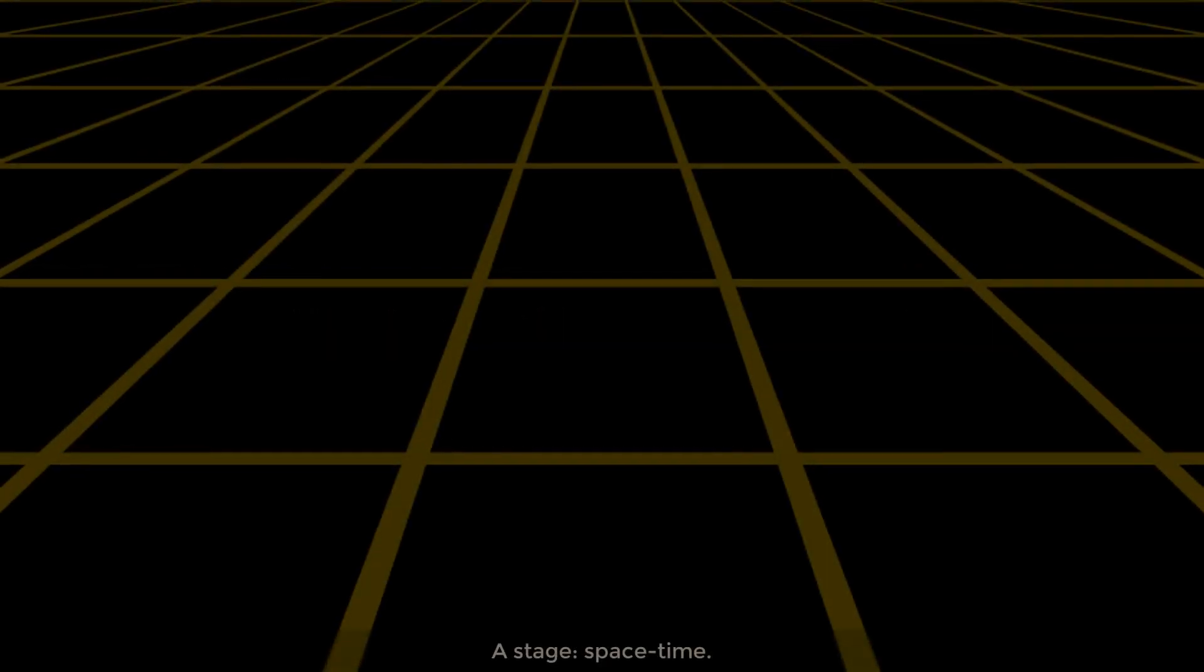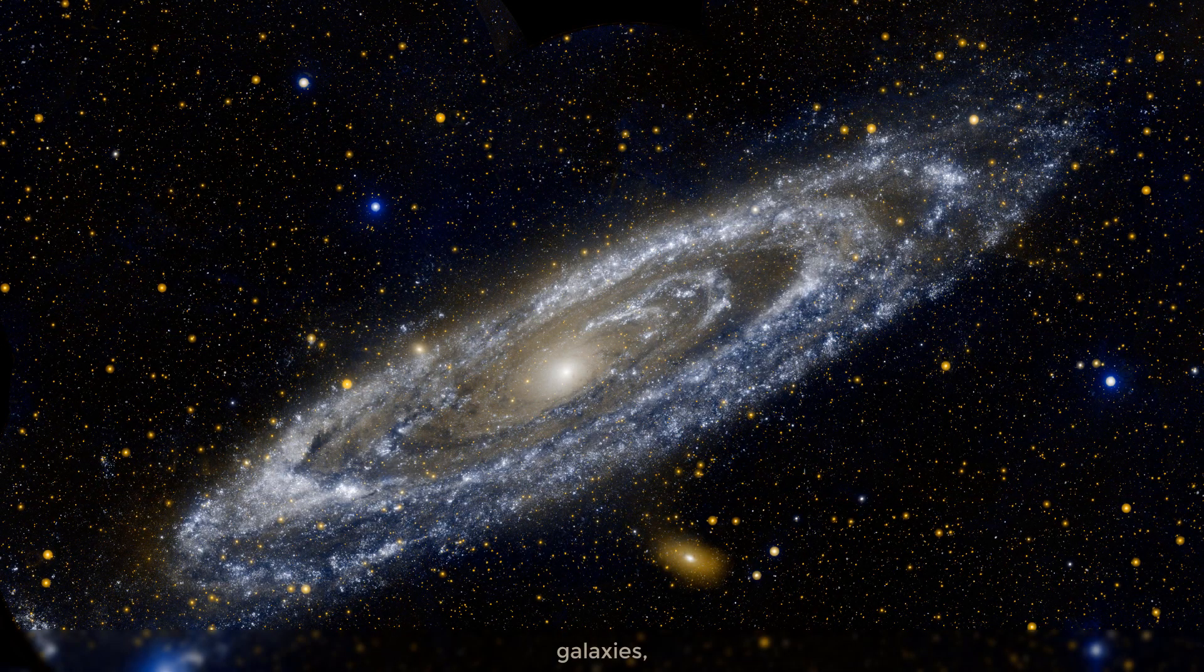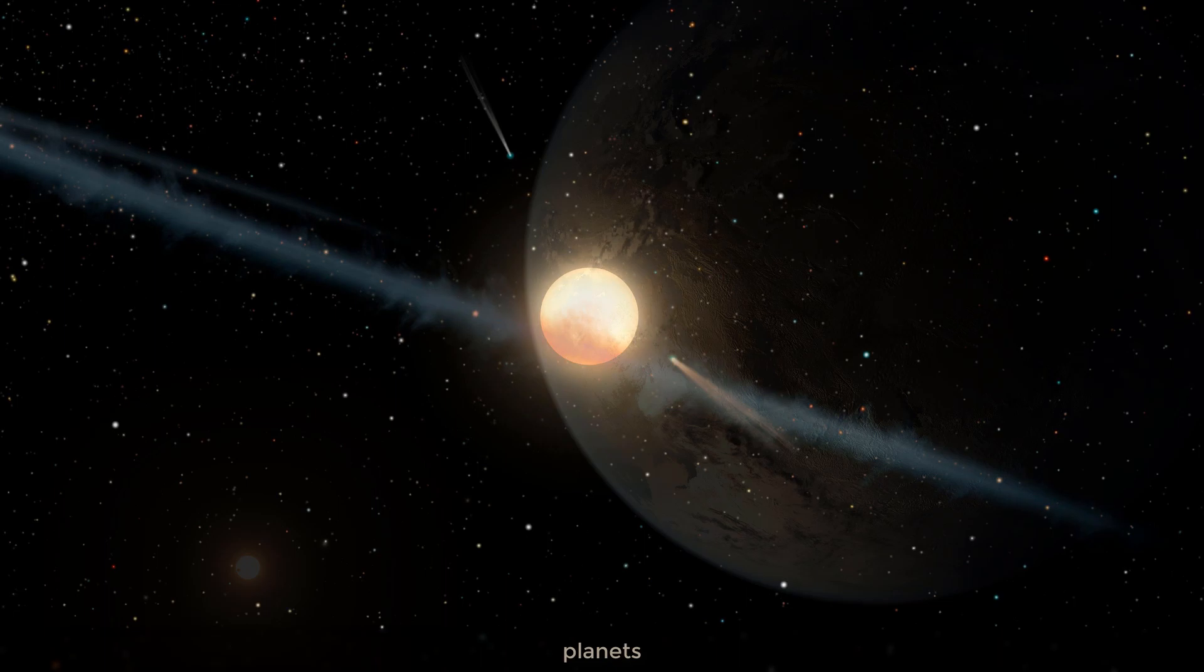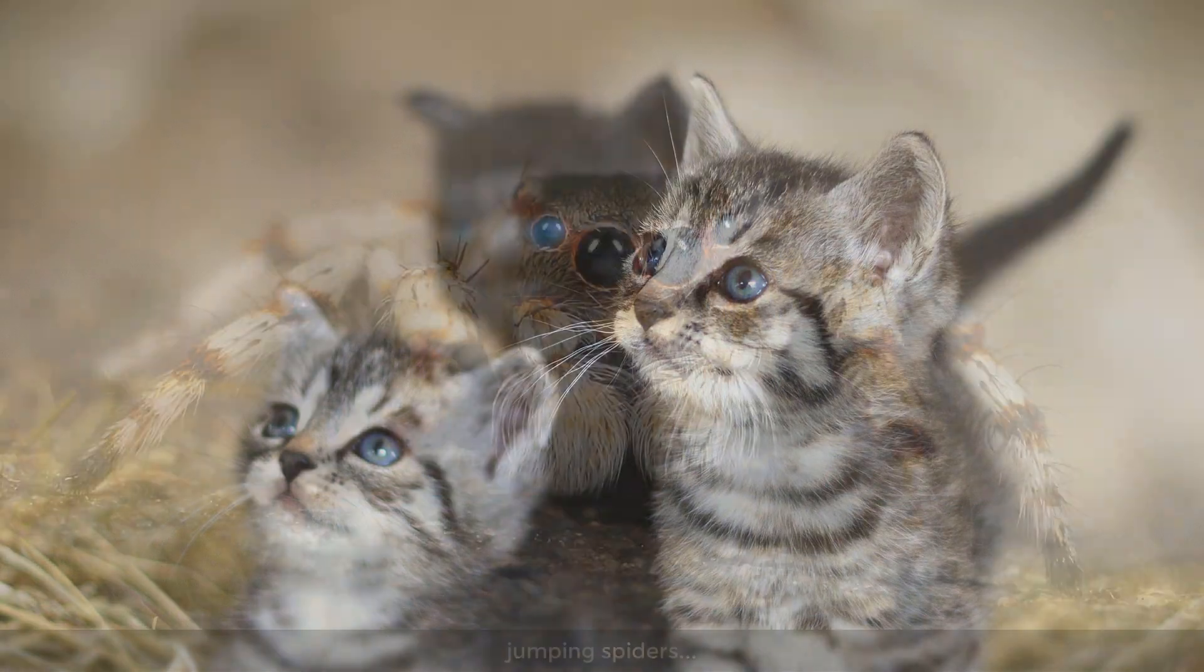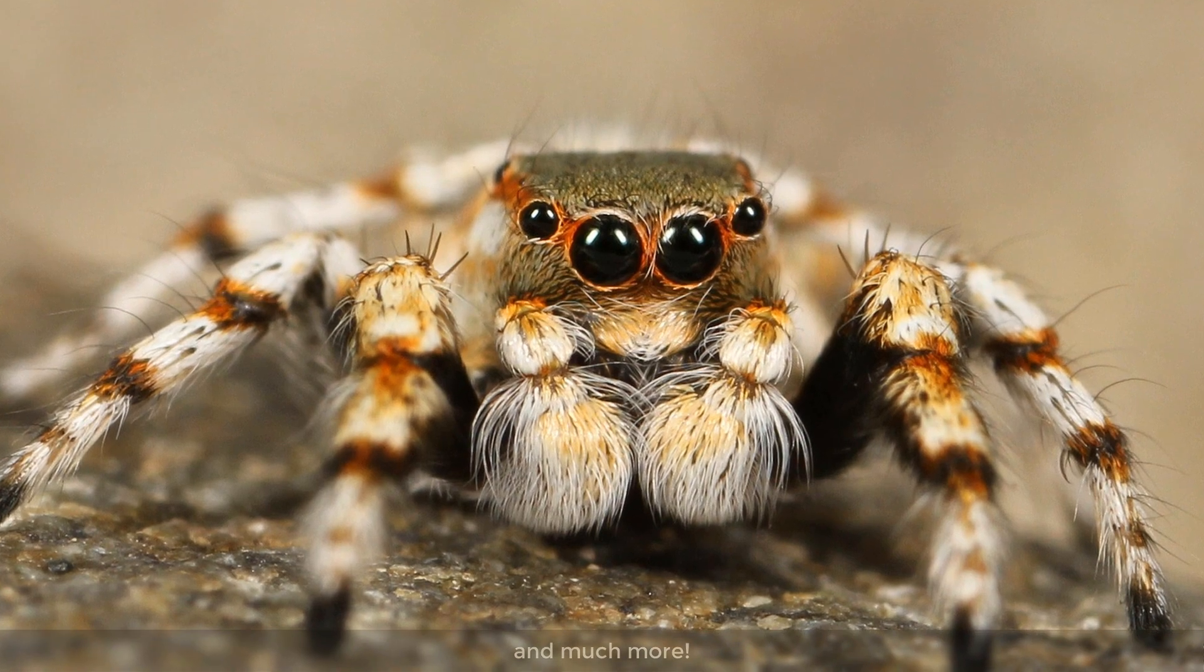What is our universe made of? A stage, space-time, and actors, which are galaxies, stars, planets, stones, boats, cats, jumping spiders, and much more.